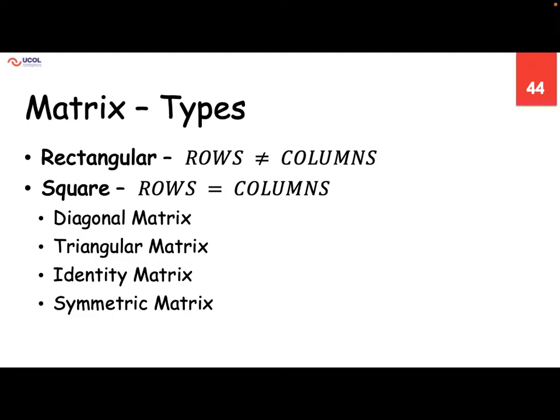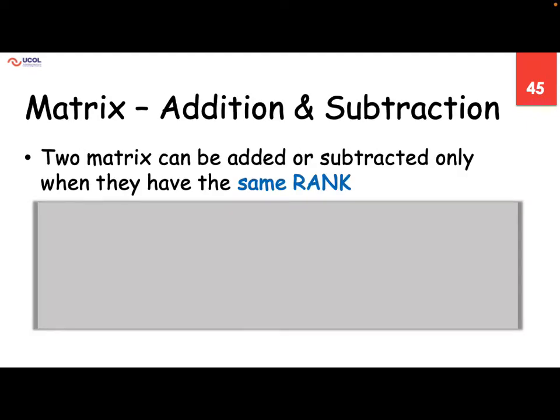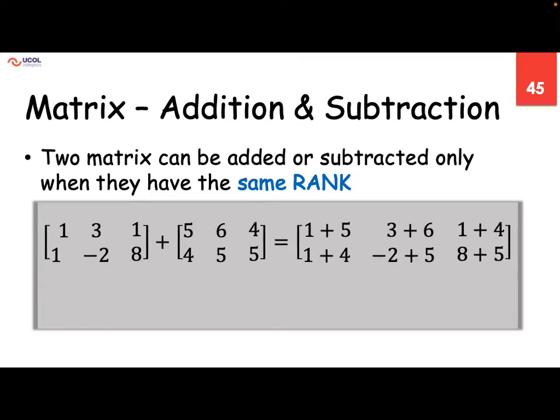First, a rectangular matrix — if rows and columns are not equal, it's a rectangle; if they are equal, it's a square matrix. We have diagonal matrix, triangular matrix, identity matrix, and symmetric matrix. A diagonal matrix only has elements in the diagonal and all other elements are zero. A triangular matrix has elements only in a triangle — maybe lower or upper — and all other elements are zero. An identity matrix has diagonal values of one and all other values are zero. When we want to add and subtract matrices, their rank must be the same — they must have the same number of rows and columns.